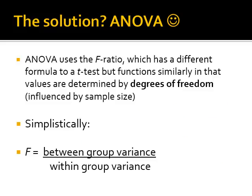ANOVA uses the F-ratio, which has a different formula to a t-test but functions similarly, and values are determined by degrees of freedom, which as you recall is influenced by sample size. Simplistically, the F-ratio, or the F-statistic, is determined by between-group variance divided by within-group variance. That's a very simplistic version of the actual formula, but it helps us understand how the F-ratio works.